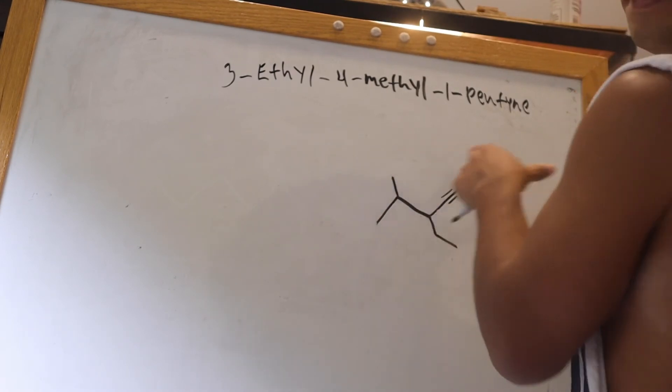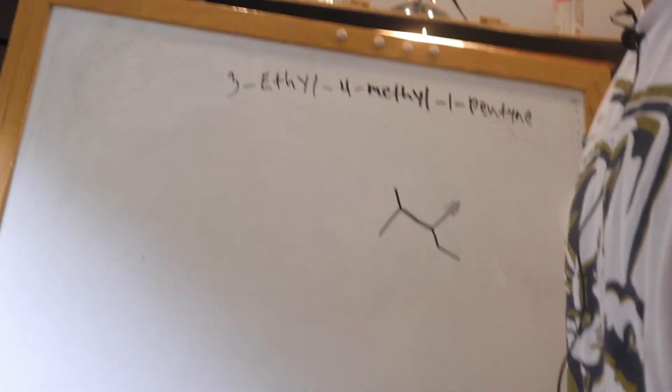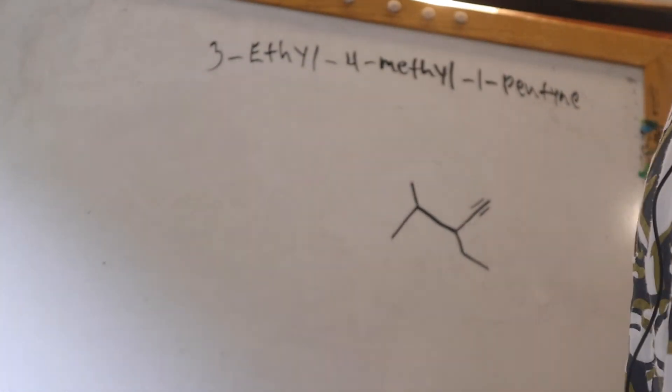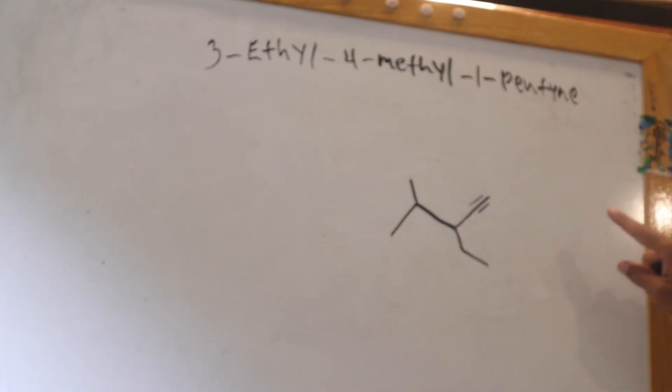But again, you don't write that. You're just going to keep it like that. So you had your first carbon, second carbon, third carbon ethyl group. Or sorry, let me put it like this. First carbon, pentene. So you have an alkene triple bond on that first carbon with the second carbon.